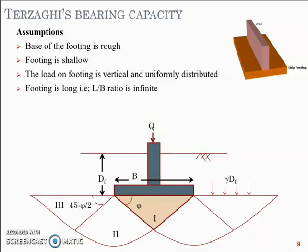Footing is long, which means L by B ratio is infinite, as you can see in this picture. This is length L, this is breadth B. He considered this footing to be of L by B ratio infinite. Next, Mohr-Coulomb relation is obeyed by the soil. You may recollect that Mohr-Coulomb equation says that τ is equal to c plus σ tan φ, c being the cohesion, σ being the effective stress, φ being the angle of internal friction.